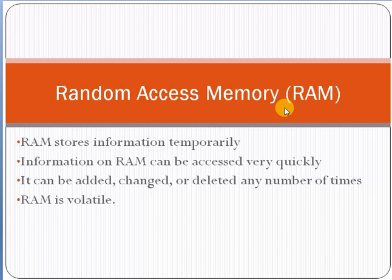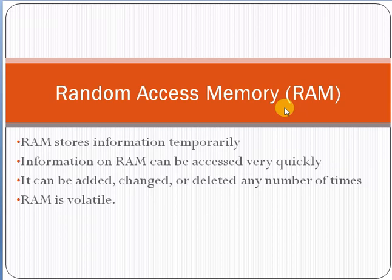RAM is basically volatile. For example, if you are working on a computer in Microsoft Word, the computer is storing your document in RAM. So if you didn't save your work and the light went out or there was a problem with the power supply and your computer shut down, your work will be lost because you hadn't saved it — it was only in the RAM.